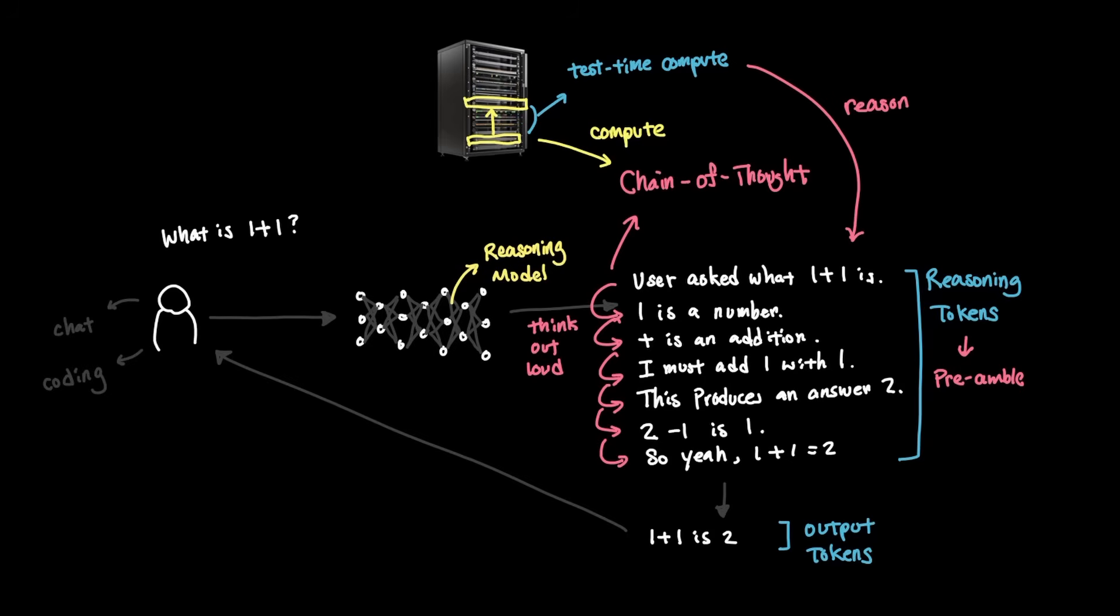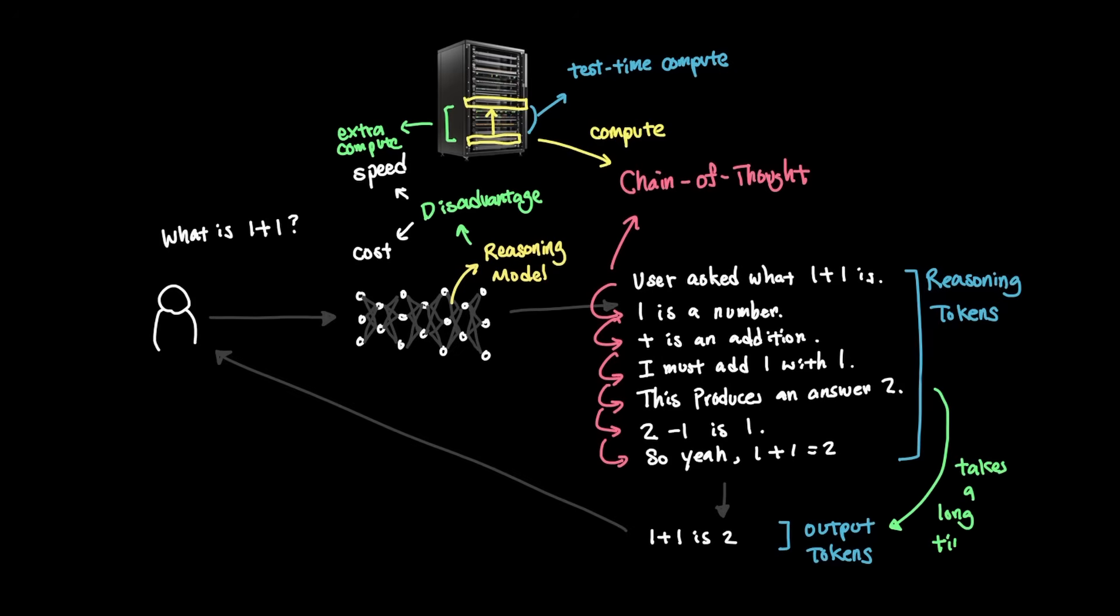But Minimax's approach is slightly different than this. The traditional way of reasoning has a disadvantage when it comes to speed and compute cost. What I mean by that is that because the model has to use extra compute during inference to essentially reason longer, generating actual output token takes a long time. In other words, a metric called time to first token shows the latency that traditional reasoning models typically have.